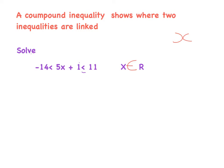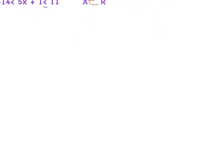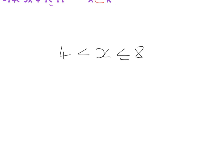My aim is to have x in the middle and nothing else. If x is in the middle with less than on one side and less than or equal to on the other — for example, if we had 4 < x ≤ 8 — I can say four is less than x, meaning x is greater than four. If x is an element of the natural numbers, the first value it could be is five.